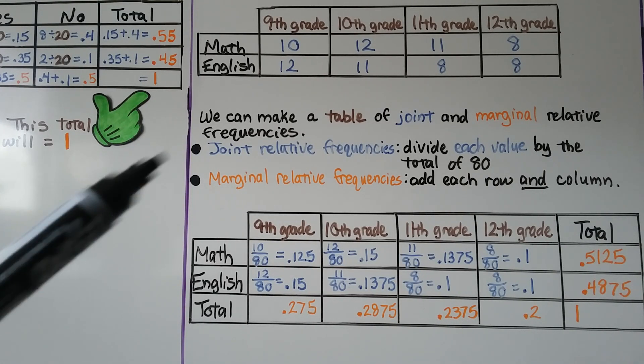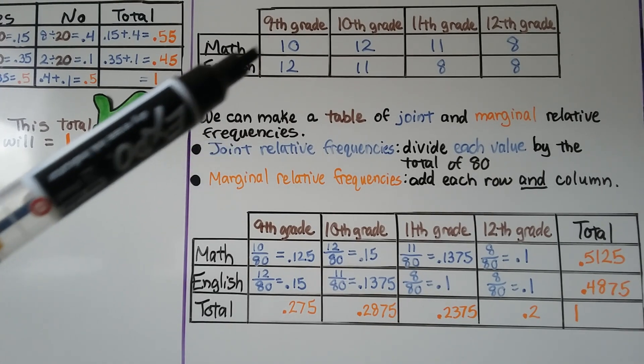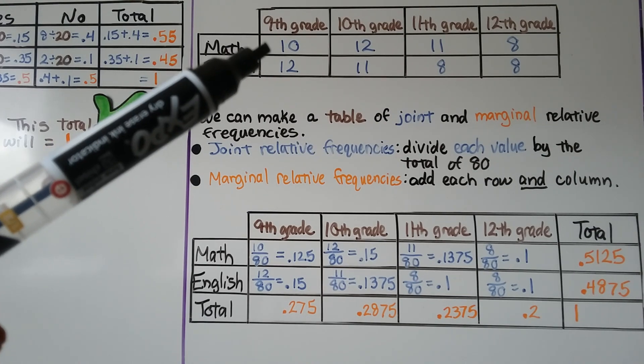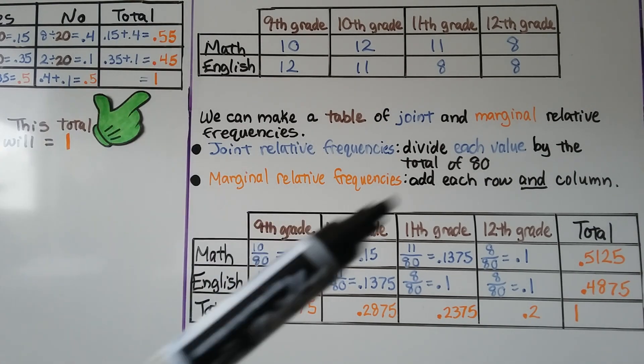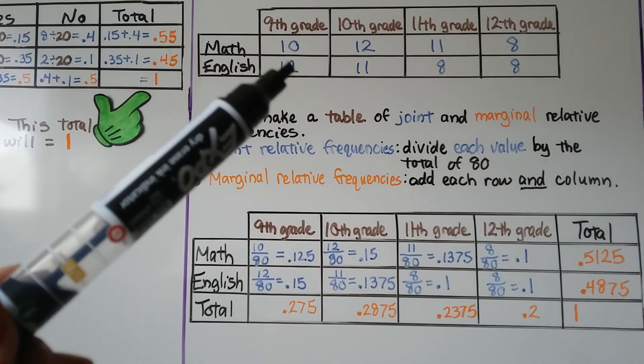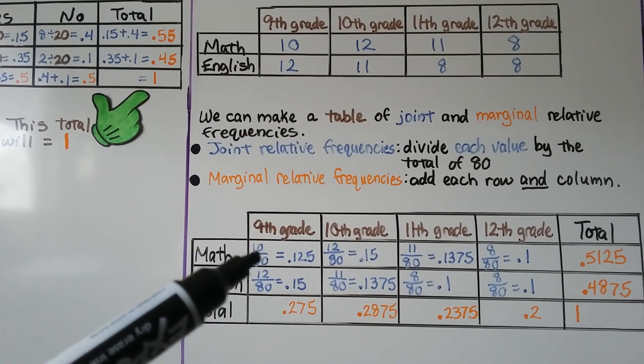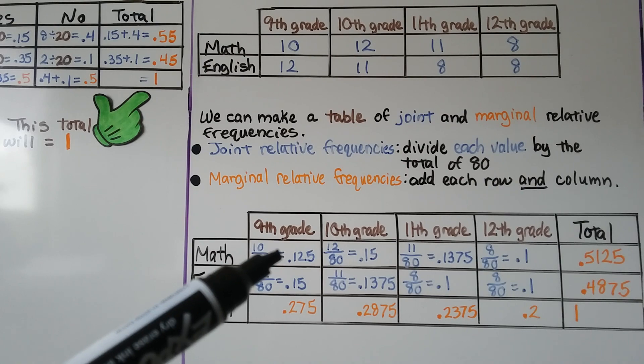So real quick, one last time, joint relative frequency: we take the value like 10 here for ninth grade math, we divide it by the total number of people asked which was 80. We have 10 eightieths which as a decimal is 0.125.